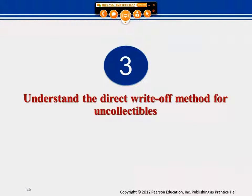Direct write-off — I'm just going to briefly go over this because it's not really recommended by GAAP, but you still have to know that some small businesses use this to take care of uncollectibles. So up to now, what I covered so far is the allowance method — allowance means that we make an estimation and set a pool of allowances for uncollectibles up front.